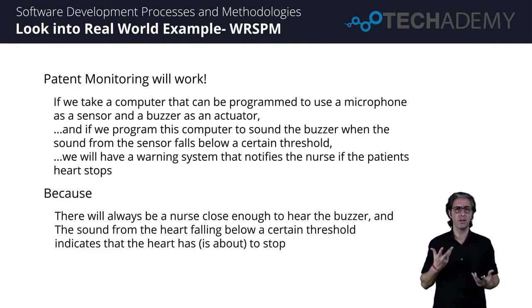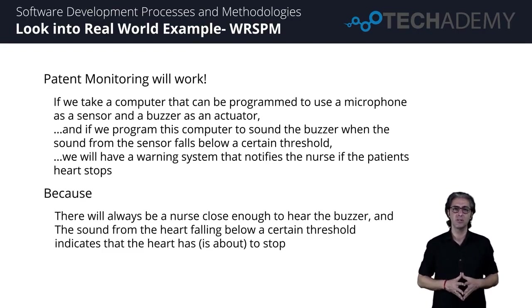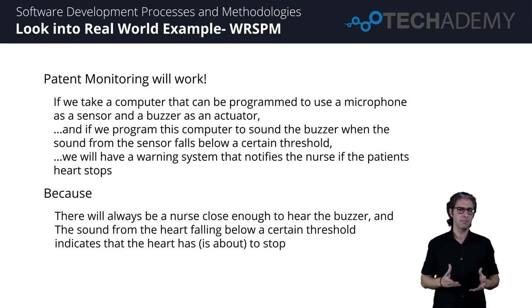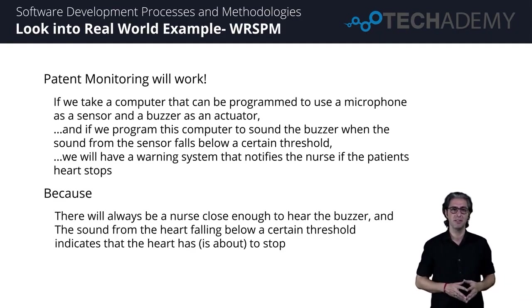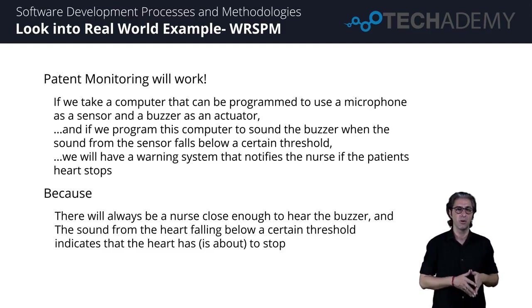What would happen if the nurses are hard of hearing or deaf? The buzzer may not be sufficient — maybe we need a buzzer with a light source, or a vibrator that physically shakes the desk. So it's not only required that a nurse is close enough to hear a buzzer — it's required that a nurse is close enough to recognize our alarm after it's actuated. There is also a world assumption that when the sound of the heart goes below the threshold, the heart has stopped or is just about to stop. Just because the sound falls below the threshold doesn't necessarily mean the heart has stopped. The only other reason for it to go under the threshold implies the sensor isn't in the right spot or is falling off — and we definitely also want the nurse to go back and check time and time again.